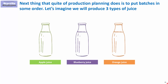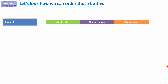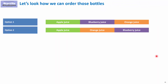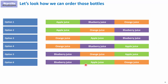We will be talking about juice production. Imagine we have three tastes being produced on our production line: apple juice, blueberry juice, and orange juice. With three types of products, there are actually six different sequences in which we can order them. For example, option one would be apple juice, then blueberry juice, then orange juice. Option two would be apple juice, orange juice, blueberry juice, and so on. Only one of these six options gives you the lowest loss.